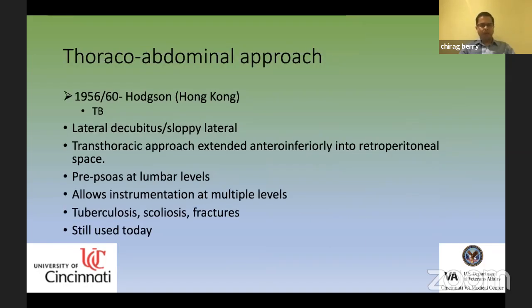In the 1970s and 80s, anterolateral techniques were used for pediatric deformities and trauma. The thoracoabdominal approach is done in lateral position — a transthoracic approach extended antero-inferiorly into the retroperitoneal space. You stay in front of the psoas at lumbar levels but may need to retract or take down the psoas at upper lumbar levels. The diaphragm is often taken down for lower thoracic spine, and it's still used today for tuberculosis, scoliosis, and fractures.